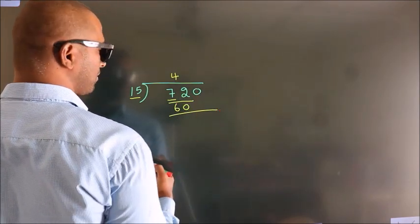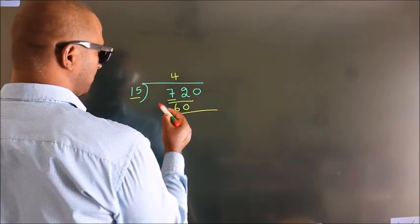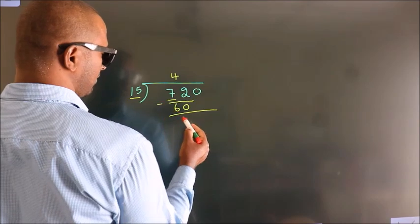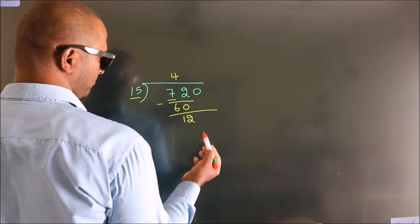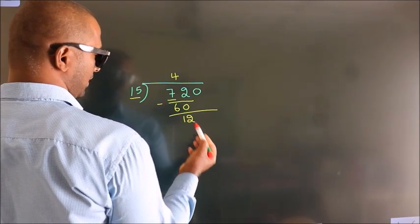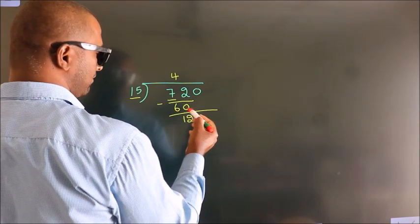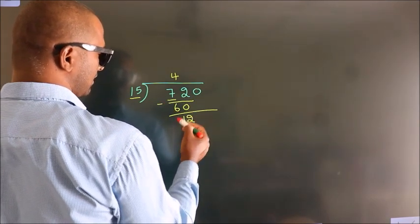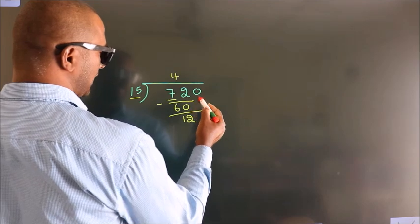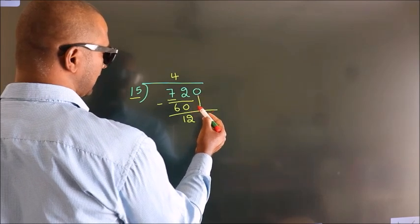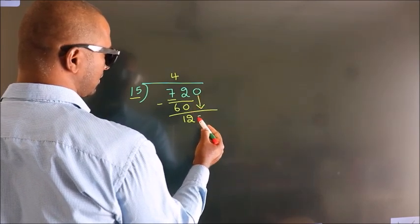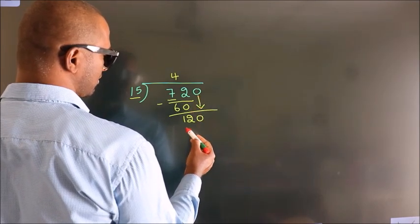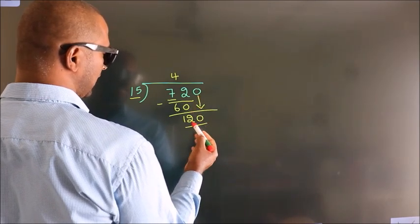Now we should subtract. We get 12. After this, bring down the beside number. So 0 down — so 120.